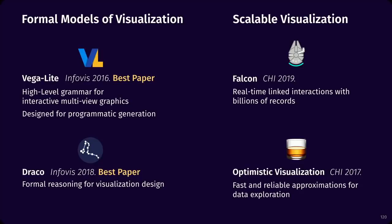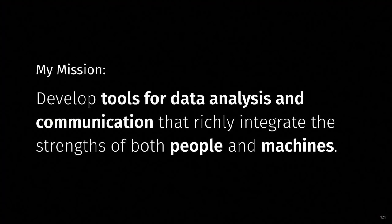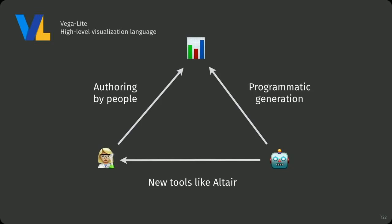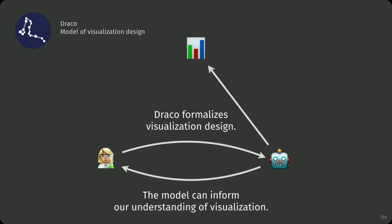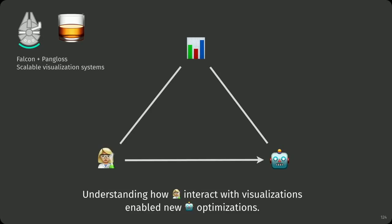This concludes the discussion of the four systems I've developed for my PhD. I've followed the mission of developing tools for data analysis and communication that richly integrate the strengths of both people and machines. In Vega-Lite, that means a language where concepts cleanly map to code and eventually to charts; by designing for programmatic generation rather than just human authoring, we enabled new tools such as Altair. With Draco, we formalized designs so tools can apply this knowledge automatically, and by building Draco we can also inform our understanding of visualization through its formal model. With Falcon and Pangloss, I implemented visualization systems that scale to large data by leveraging a deep understanding of how users interact with visualizations, enabling me to think differently about how we design and optimize systems.